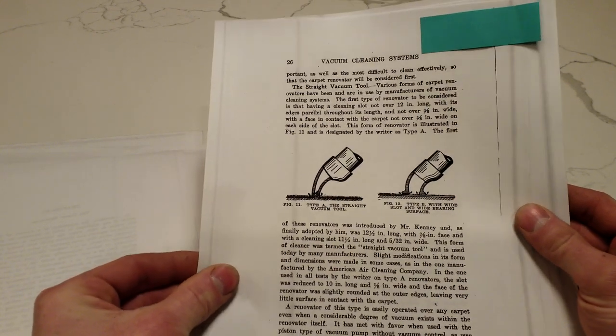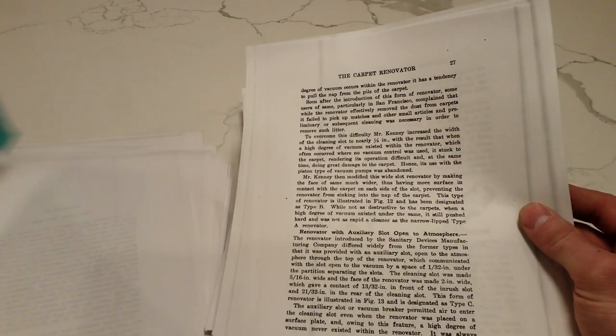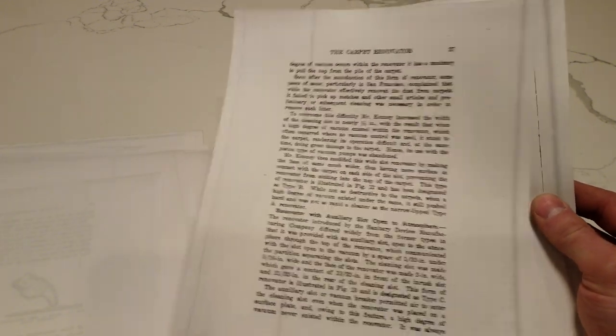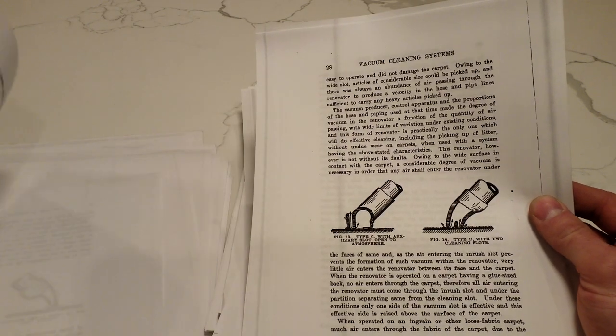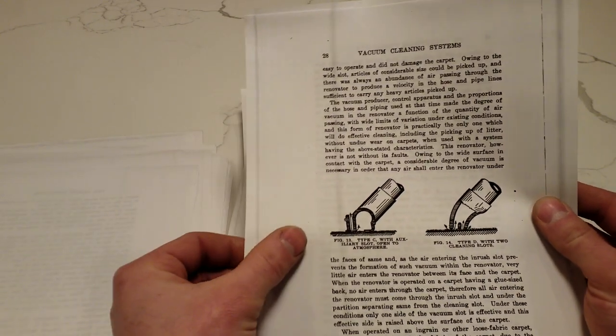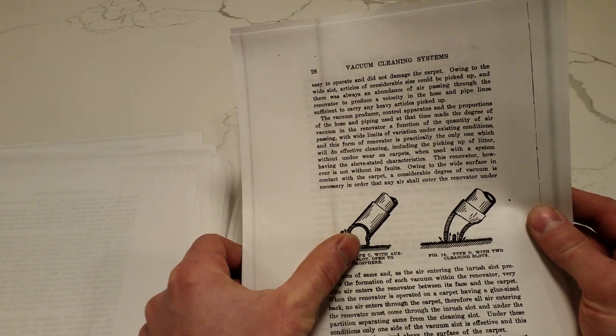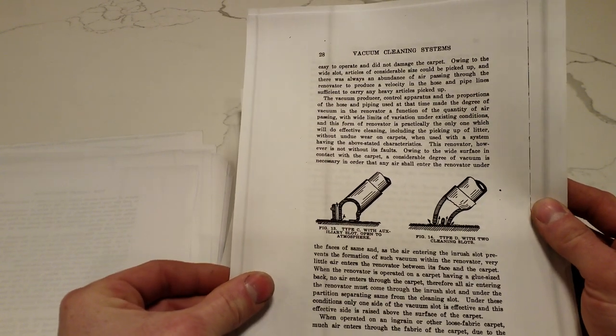And then there's type B, the wide slot. Type C with the inrush slot, to make it easier to push, the air would kind of bypass and come in, so it wouldn't glue itself down to the carpet.